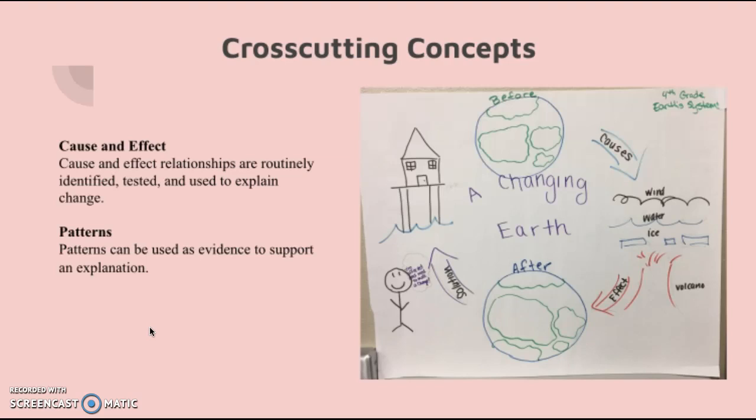And this is an example of this picture that shows before how the earth is, what certain causes, wind, water, and ice, and the effect that these have on the land is the land moves around, it changes.